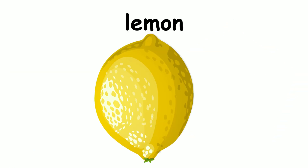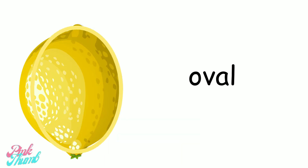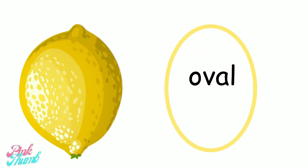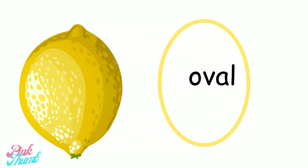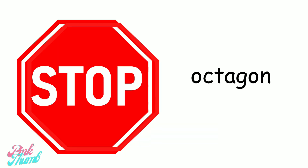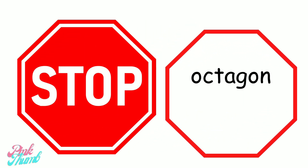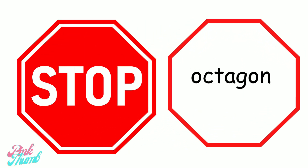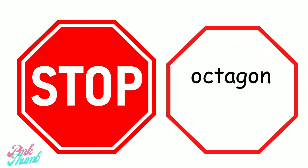What shape is this lemon? An oval. What shape is this stop sign? An octagon.